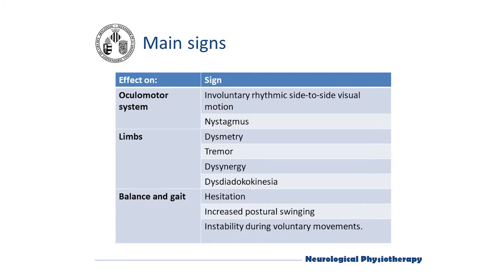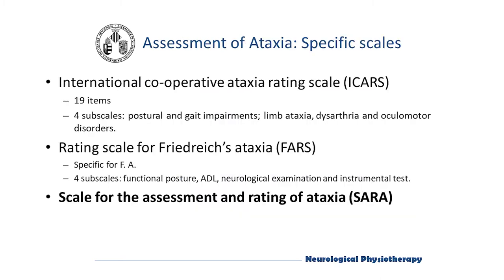Firstly we show you the main clinical signs of cerebral ataxia, which are related to the oculomotor system, the movement of the upper and lower limbs, and impairment of balance and gait. All of these signs will be assessed through this video. There are different specific tests for the assessment of ataxia, such as ICARS, FARS, or SARA, among others.